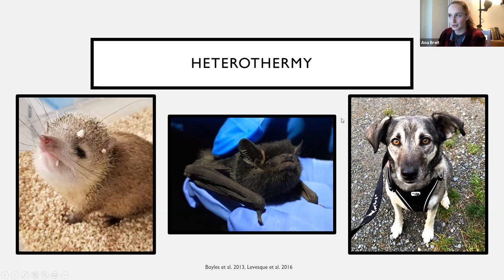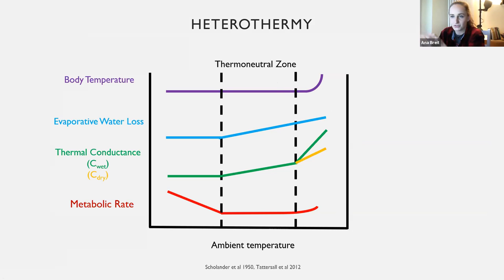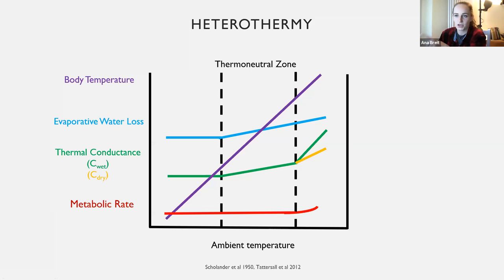We know that heterothermy exists on a continuum — that's a relatively new finding. When you try to apply the Scholander-Irving curve to a heterothermic animal, sometimes they are homeothermic when they have young, are pregnant, or are lactating, maintaining a constant body temperature because it benefits offspring growth rates. But other animals just drop their body temperature and let it track ambient temperature because it's cheap. When they drop their body temperature, you also see changes in metabolic rate — we don't really know whether metabolic rate drops first or body temperature drops first.